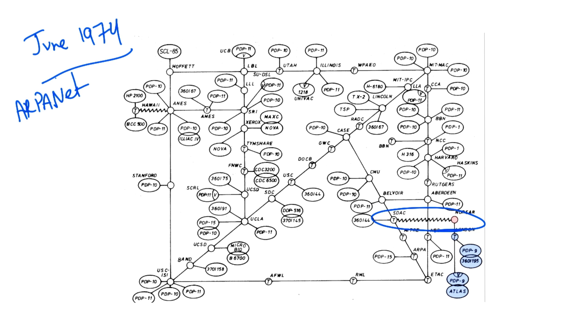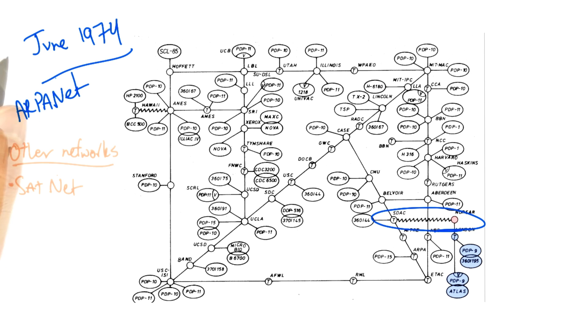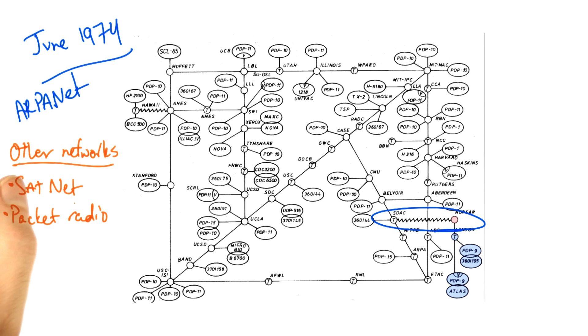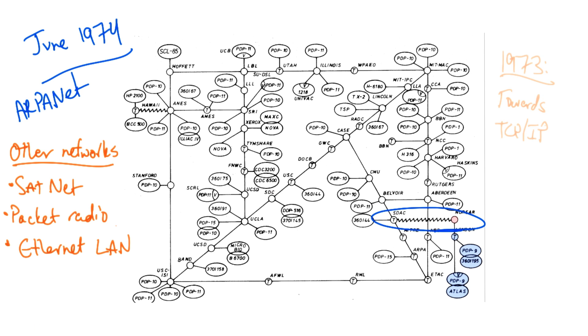The ARPANET wasn't the only network — there were other networks at the time. SatNet operated over satellite. There were packet radio networks, and there were also Ethernet local area networks.